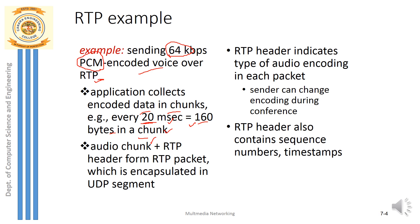All those audio chunks have the RTP header added — header plus chunk forms a complete, full-fledged RTP packet. Every audio chunk generated is added with the header to form the RTP packet, which is then sent to the UDP layer. UDP adds its own header, encapsulating the RTP packet inside a UDP datagram. The RTP header indicates the type of encoding scheme used for each packet, and also contains the sequence number and timestamp.